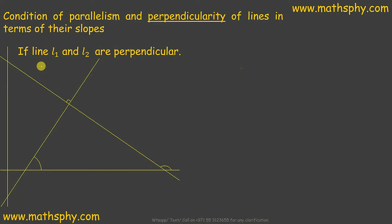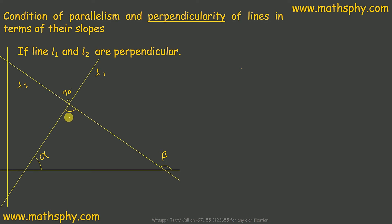Now let's see if L1 and L2 are perpendicular. Suppose this is L1, this is L2, and the angle between them is 90 degrees. This is the angle for L1 — let's take it as alpha — and this is the angle for L2. We can see that vertically opposite to this 90-degree angle, we also have 90 degrees.